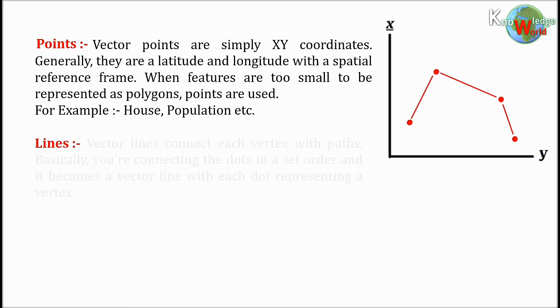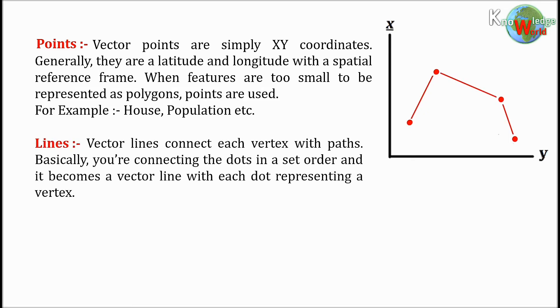Lines: Vector lines connect each vertex with paths. Basically, you're connecting the dots in a set order and it becomes a vector line with each dot representing a vertex.